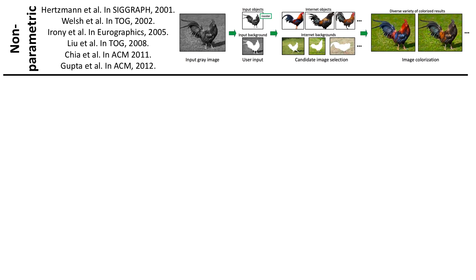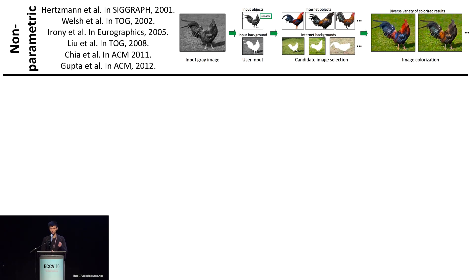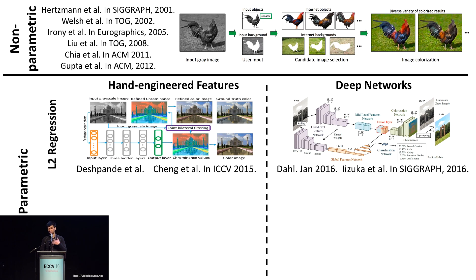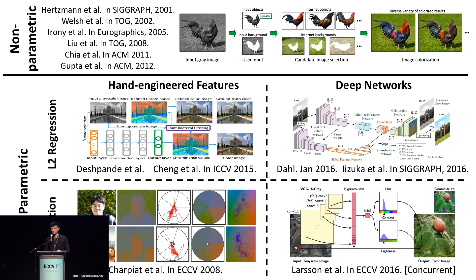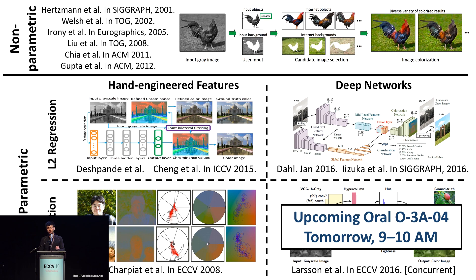How does our system compare to previous work? Many previous techniques have focused on using a nonparametric framework, where a reference image is obtained and colors from it are transferred to the grayscale input. This can work very well but can fail to generalize, and obtaining the reference image can be slow or require user intervention. Some previous parametric techniques have used L2 regression with both hand-engineered features and deep networks. We're also not the first to cast colorization as multinomial classification — there's older work from Charpiat et al. at ECCV 2008 which proposed this classification framework and actually inspired us. There's also concurrent work from Larson et al. appearing in these proceedings with a presentation tomorrow morning.